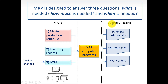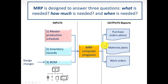MRP has three main inputs on the left and outputs on the right. Input one is the master production schedule. Input two is the inventory record. Input three is the bill of materials — the recipe to construct an item — which also has its own inputs like design changes. For example, a car facelift like the Audi A4 B9 launched around 2017-2018 involves design changes that affect the bill of materials. Outputs include orders, purchase orders, and material planning reports.